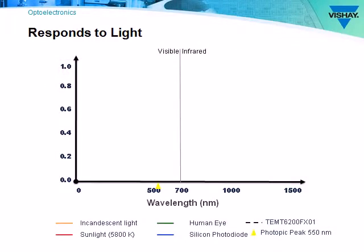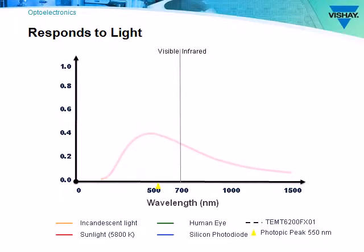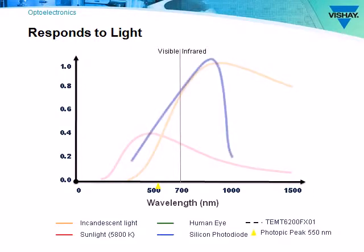An ambient light sensor must distinguish between many different wavelengths of light. For example, sunlight contains a broad range of UV, visible, and infrared light, while incandescent and fluorescent lights contain visible and infrared light. Using a standard silicon photodiode as an ambient light sensor won't work because it responds to both visible and infrared light.